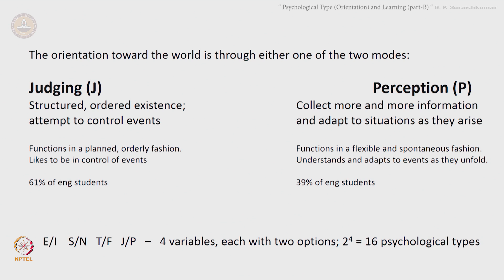So we have these four different types — extroverted/introverted, sensing/intuition, thinking/feeling, and judging/perception. There are four variables, each with two options, and therefore there are 2 to the power of 4 — 16 psychological types: ESTJ, ENTJ, and so on and so forth. This is what the Myers-Briggs Type Indicator MBTI gives one.